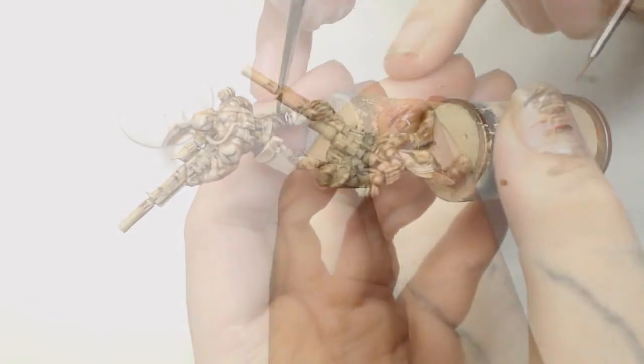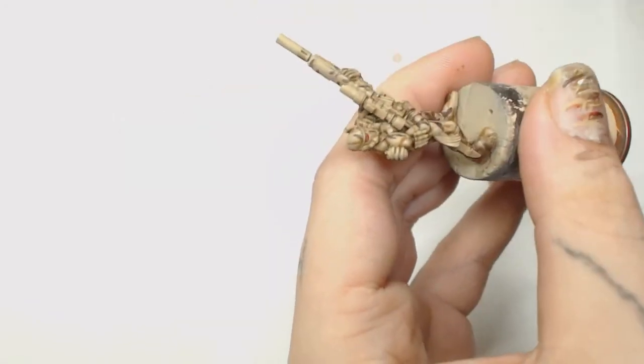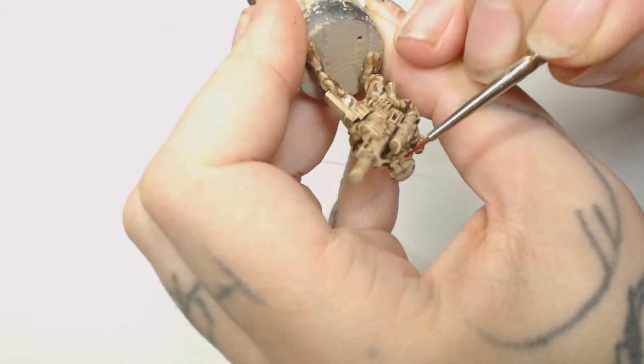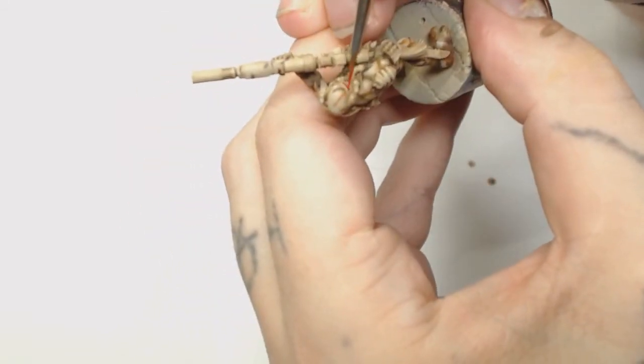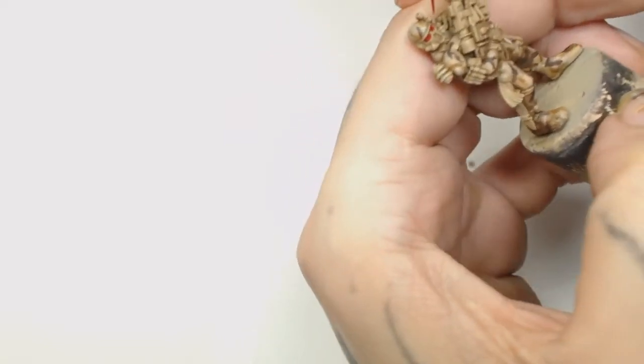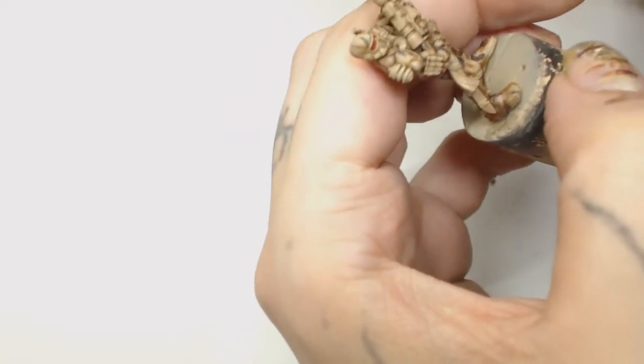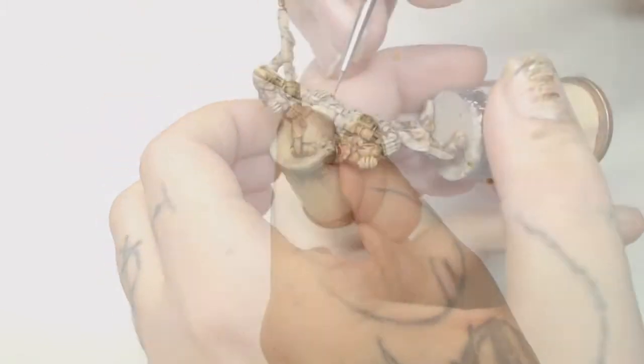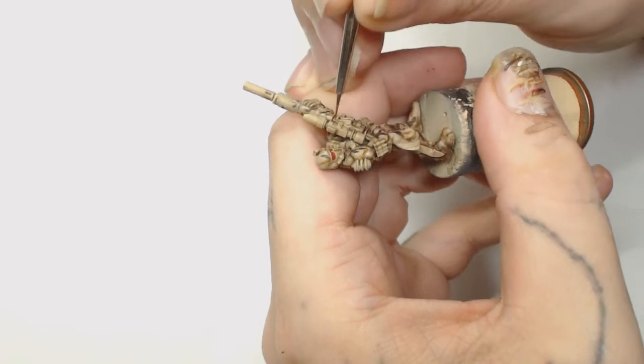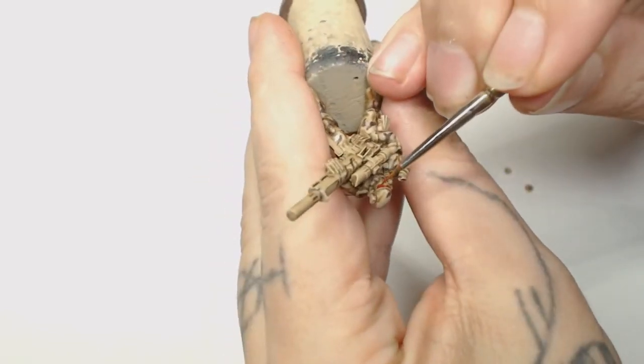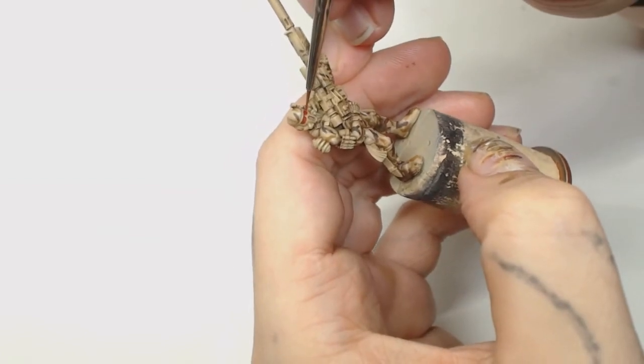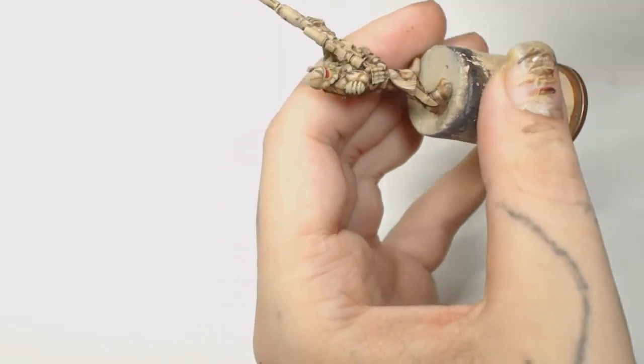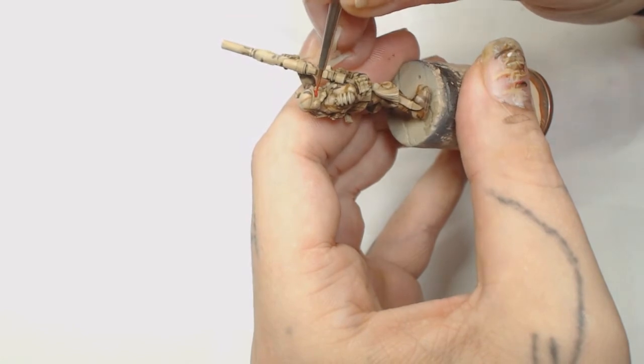Then I decided to start working on the face plate. I started working inside out so there's less chance of mistakes, using Mephiston Red by Games Workshop to fill in those eye lenses. Just be really careful you don't drag your brush away and put a big red brush stroke on your gun or anything else.